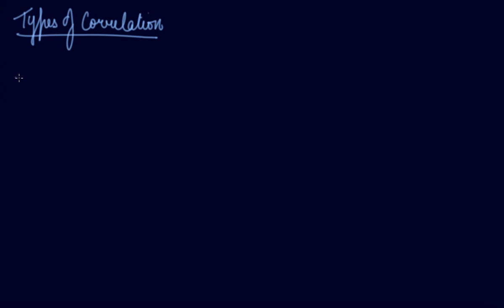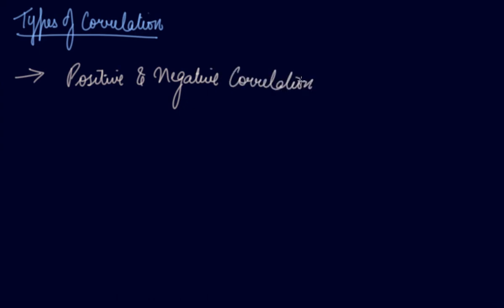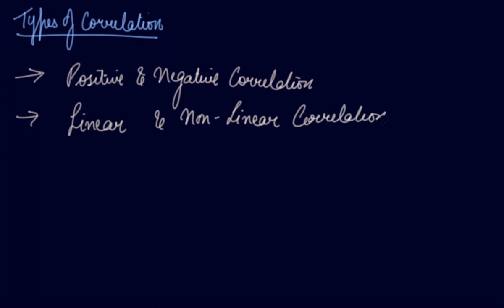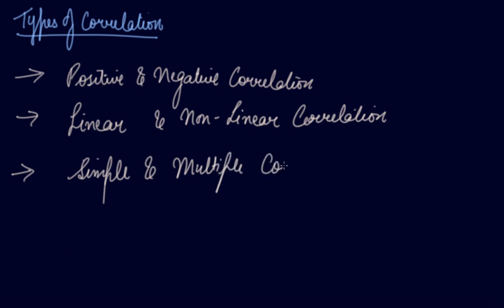In this video we will be studying about the types and the degree of correlation. The correlations have positive and negative correlation, then linear and nonlinear correlation, and the third one is simple or multiple correlation. Let's study these individually.